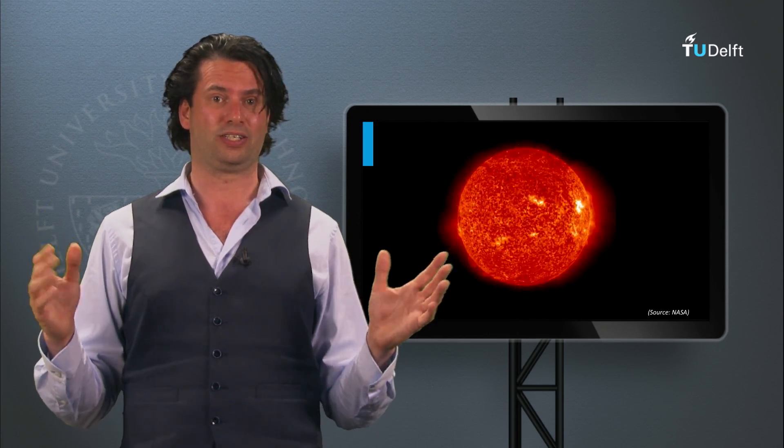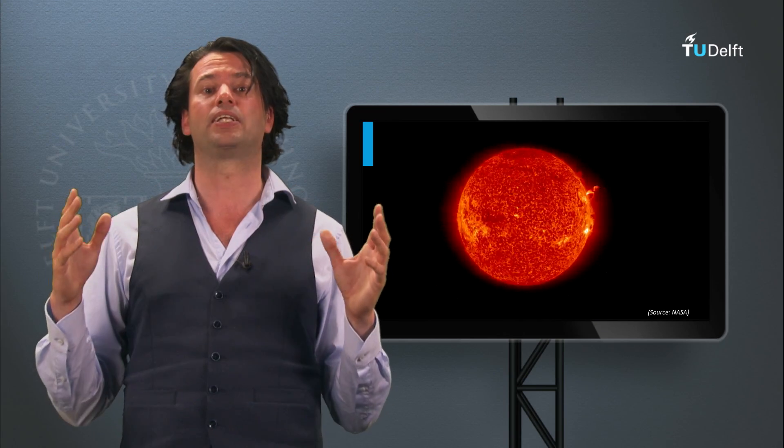What is light? What are the physical properties of light, and how does a typical solar spectrum look like? Let's start with the first question. What is light?